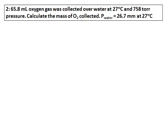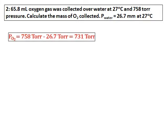65.8 milliliters of oxygen gas is collected at 27 degrees Celsius and 758 Torr total pressure. Calculate the mass of oxygen collected. The vapor pressure of water is given as 26.7 mmHg at 27 degrees Celsius. To calculate the pressure of oxygen, the pressure of oxygen equals total pressure minus vapor pressure of water, giving 731 Torr. I've written 26.7 mmHg as 26.7 Torr since millimeters of mercury is the same unit.